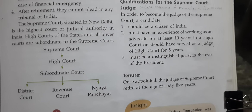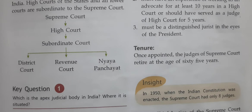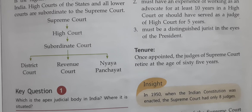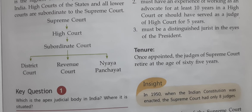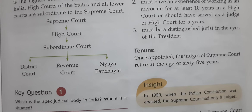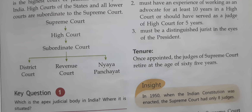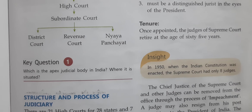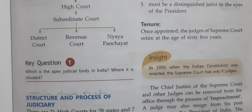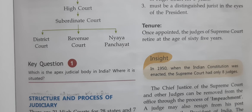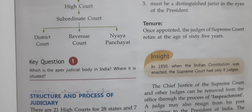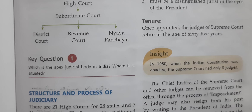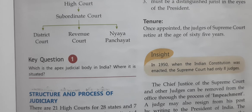Number 3 — must be a distinguished jurist in the eyes of the President. अब यहाँ पर President की नज़र में वो एक distinguished jurist का काम भी जानता हो यह ज़रूरी है। Tenure — समयकाल: once appointed, the judges of the Supreme Court retire at the age of 65 years. एक बार appointment हो जाने के बाद judge की retirement 65 साल की age में होती है।